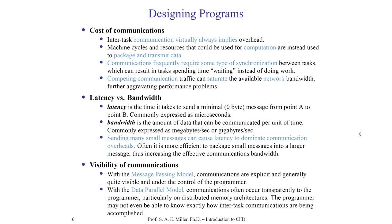There's also the visibility of communications, which is more to do with what the programmer sees. When creating codes with a message-passing model, you'll often program each communication directive explicitly. In other models they'll be completely invisible to you. For example, the OpenMP library to parallelize serial codes on shared memory machines — this type of communication is often completely invisible to the programmer, except for specifying the number of cores to use. The message-passing model is much more explicit. The MPI model is the most popular in programming CFD codes because it can work on heterogeneous distributed memory machines seamlessly.